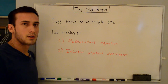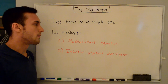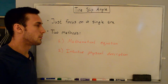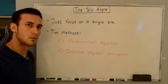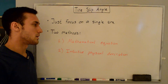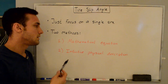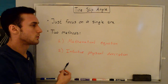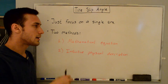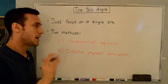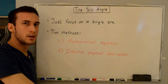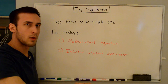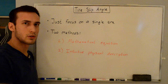There are two ways of looking at tire slip angle. The first is the mathematical equation of the slip angle, which will be useful in future videos on vehicle dynamics, oversteer, understeer, and neutral steer. The second is the intuitive physical description of the slip angle, where we look at what is actually happening to rubber in the footprint as we turn our tire while moving in a certain direction.